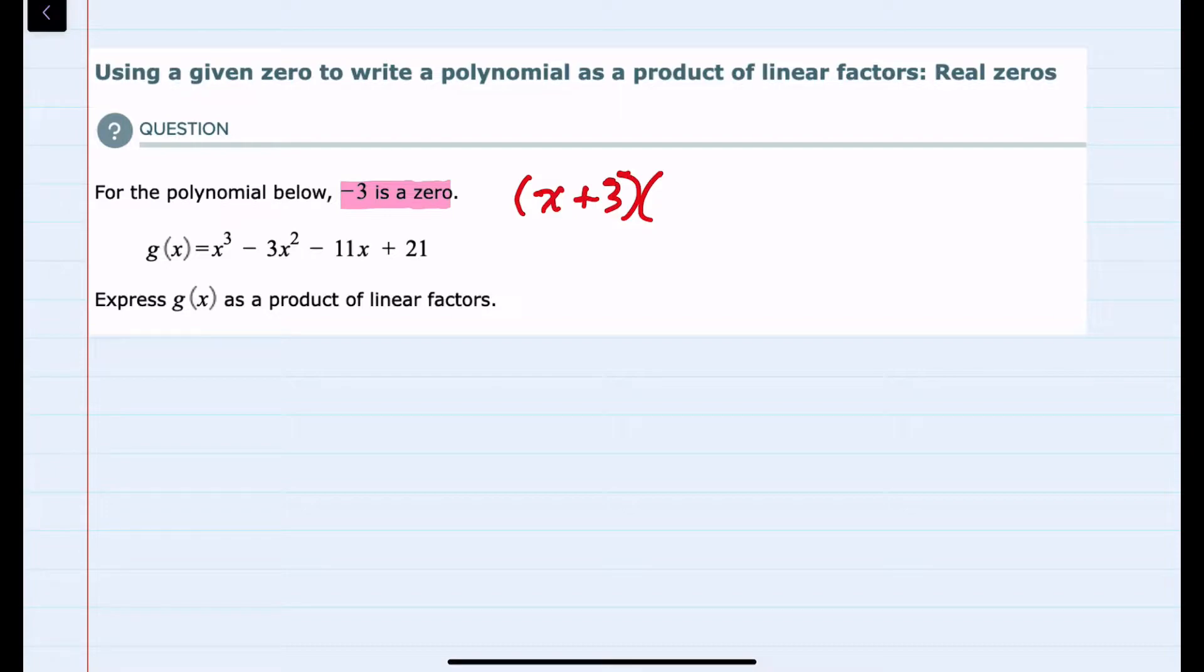But at this point, I don't know what the rest of the polynomial is going to look like. But since x plus 3 is a factor, I can do either synthetic division or long division using the x plus 3 and the original polynomial. For this example, I'll set it up as long division.